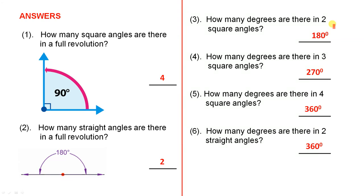How many degrees are there in two square angles? One square angle is 90. Two square angles gives you another 90. So there must be 180 degrees because 90 plus 90 is 180. How many degrees are there in three square angles? 90 plus 90 plus 90 is 270.